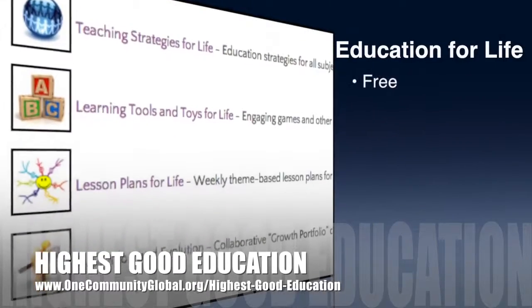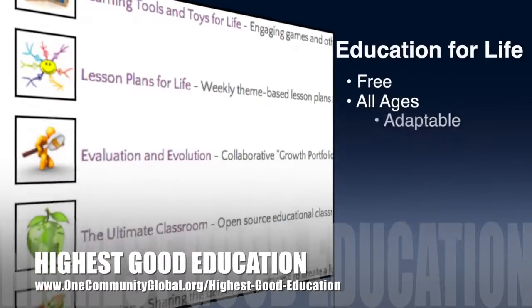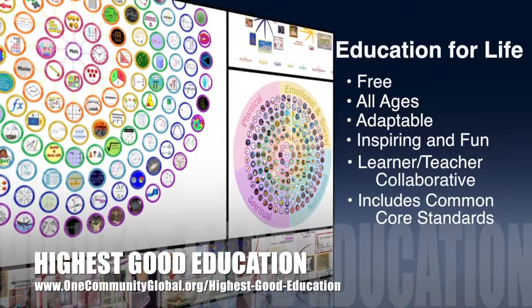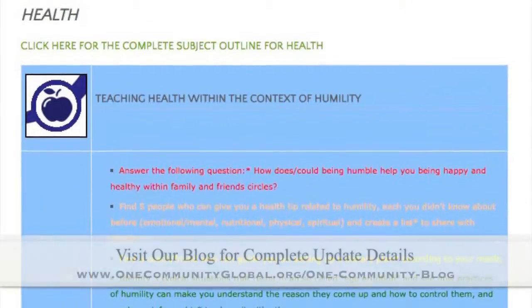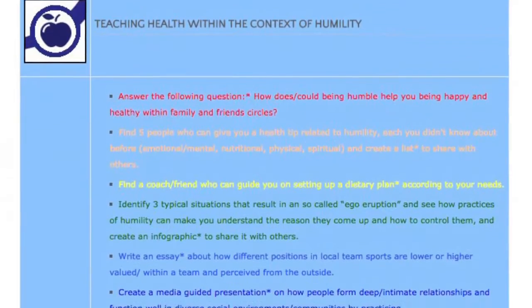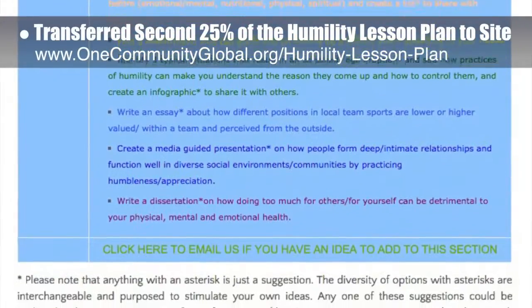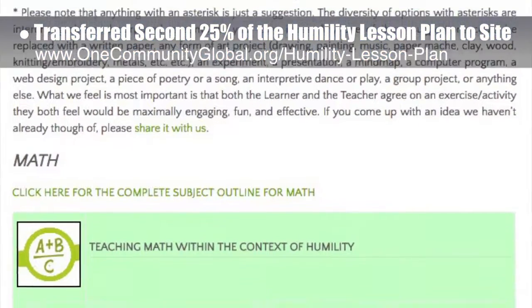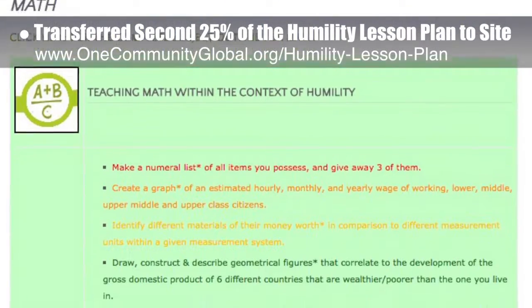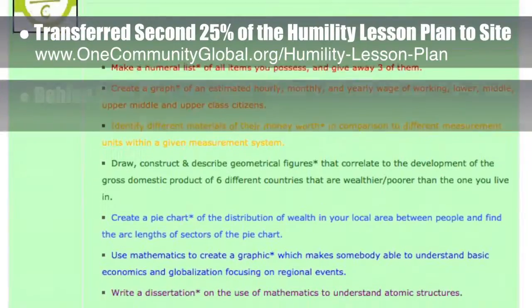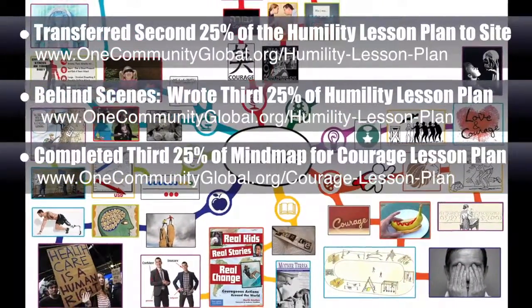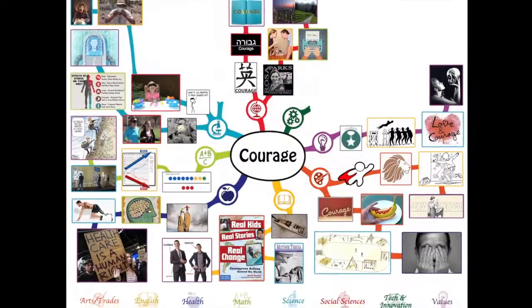One Community's approach to highest good education is open source and free shared, designed for all age groups, adaptable to any schooling environment, inspiring and fun, a learner-teacher collaborative, and includes U.S. Common Core Standards. This week the core team transferred the second 25% of the written content for the humility lesson plan to the website, bringing it to 50% complete. Behind the scenes, we wrote the third 25% of that plan and completed the third 25% of the mind map for the courage lesson plan, bringing it to 75% complete.